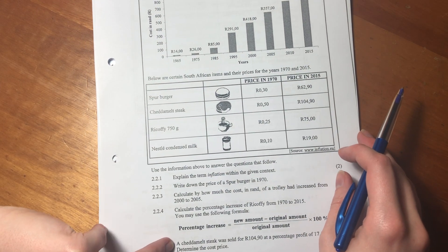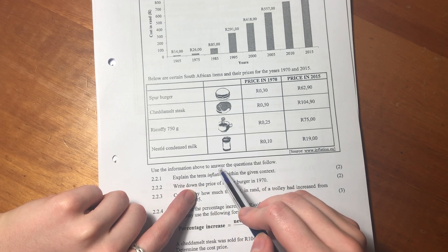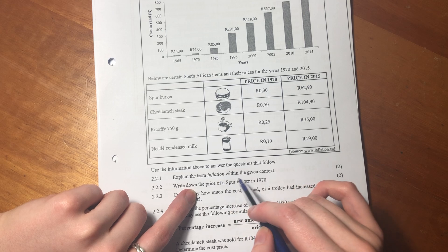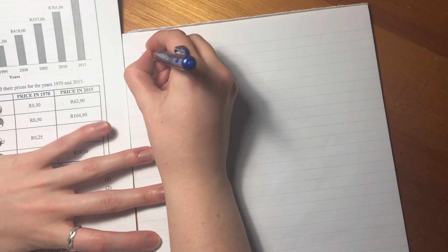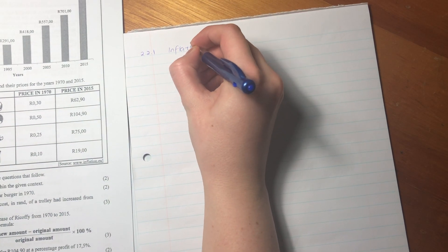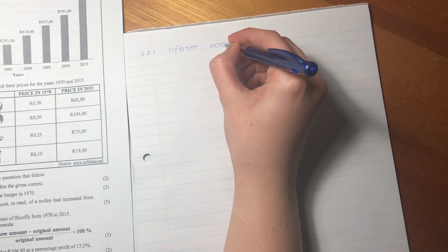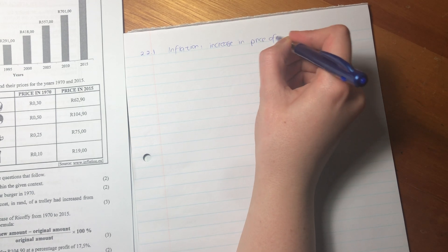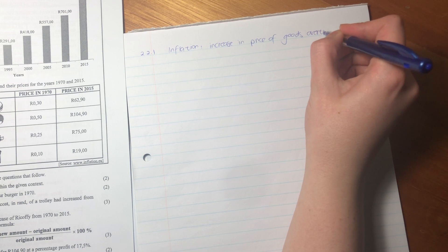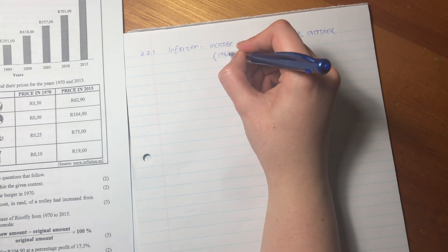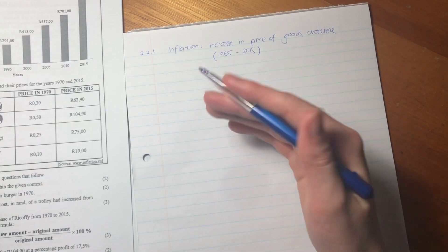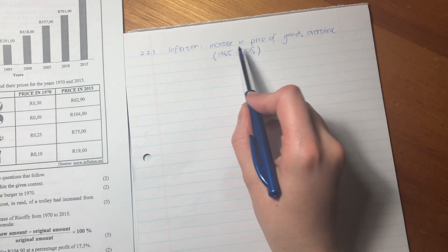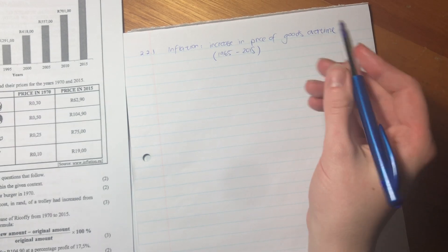So let's just quickly jump into the questions. Use the information above to answer the questions that follow. It says explain the term inflation within the given context. We don't need this addendum for this question. Let me just write 2.2.1. So inflation, it's the increase in price of goods over time. Inflation is what pushes the price up of certain goods. It's one of the contributing factors, but in this case, we're specifically talking about inflation as the increase in the price of goods over time.